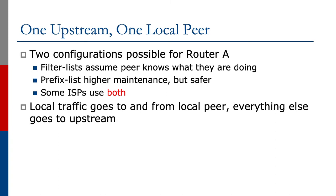The two configurations possible for Router A — prefix list is the best way of doing it. It's industry standard, although you may be a bit worried about the extra maintenance. What if the peer introduces another prefix? You have to update your filter. Industry best practices are such that if the peer introduces another prefix, the peer would let you know to please update your filters. The filter list, filtering by ASPath, assumes the peer knows what they're doing and is very, very trusting.